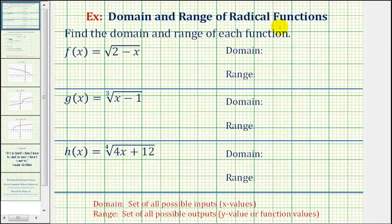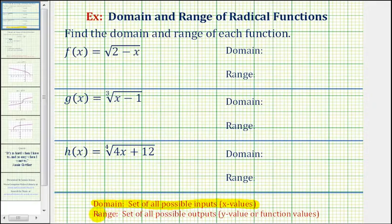We want to find the domain and range for each radical function. To review, the domain is a set of all possible inputs or x values, and the range is a set of all possible outputs, which would be the y values or function values.